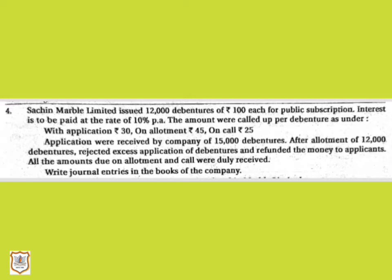Here is the question: Suchit Marble Limited issued 12,000 debentures of rupees 100 each for public subscription. Interest is to be paid at the rate of 10% per annum. The amounts called up per debenture were: on application rupees 30, on allotment rupees 45, on call rupees 25. Applications were received for 15,000 debentures.